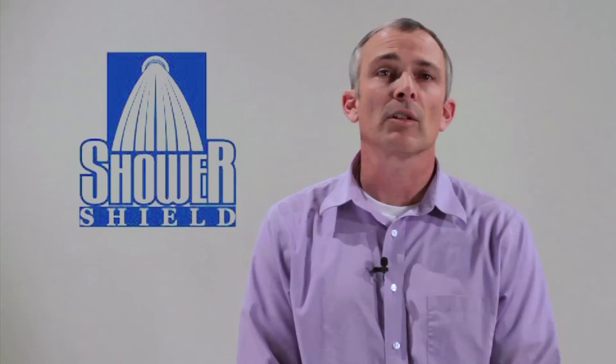To remove the Shower Shield, simply peel off in the direction of hair growth. If the patient has delicate skin, you may need an adhesive remover, but for most patients, the dressing will come off rather easily, leaving only a little redness.